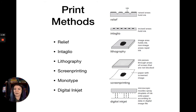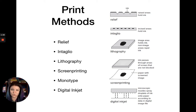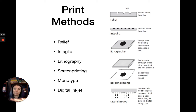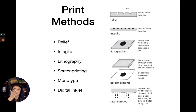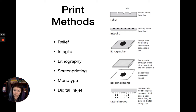The next technique group is called intaglio, an Italian word that basically means to cut into or incise. Intaglio is the opposite of relief: in relief, ink sits on the raised areas, whereas in intaglio, the ink sets down in the carved-in divots—the incised, cut-into areas—and that's where the print comes from.